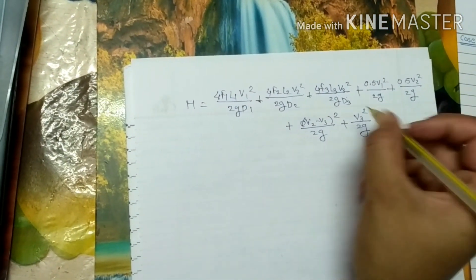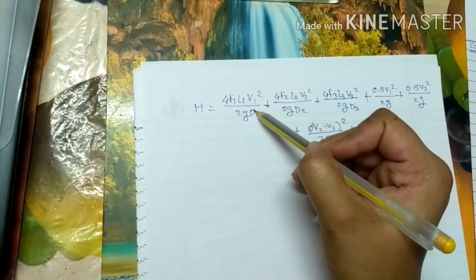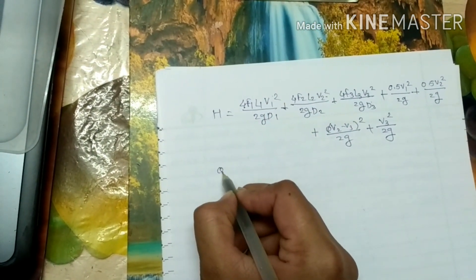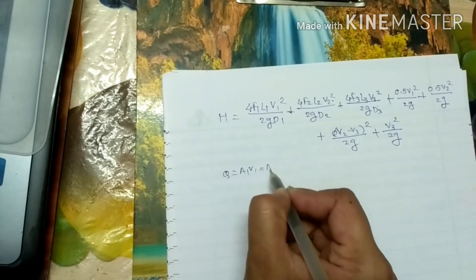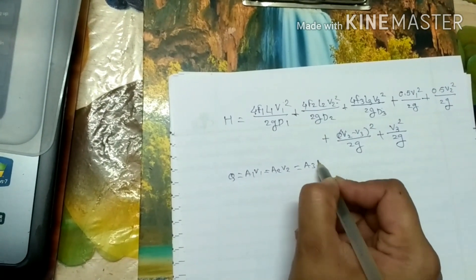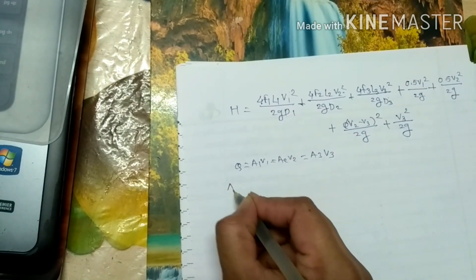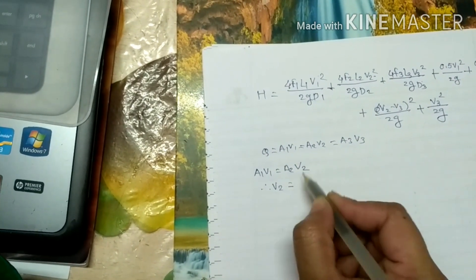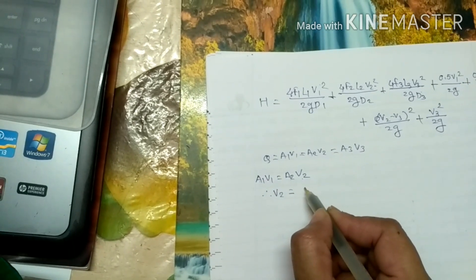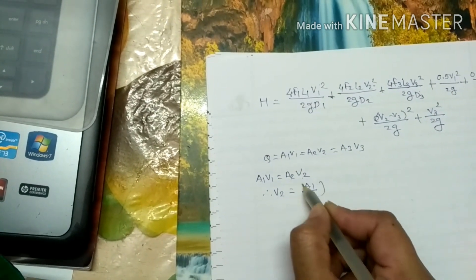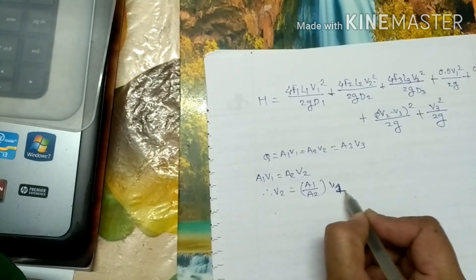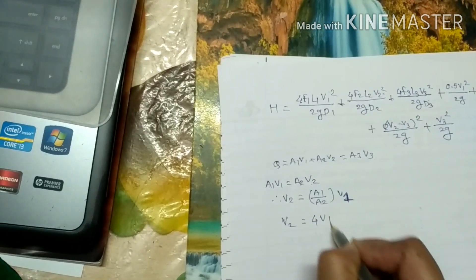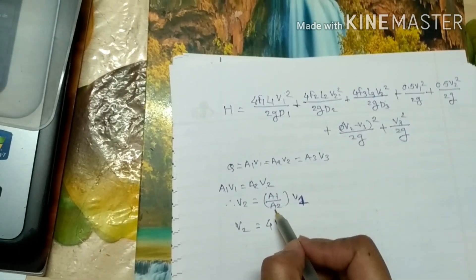We have values of f, L, and d for all pipes, but v1, v2, and v3 are unknown. To calculate them, use continuity: Q = a1·v1 = a2·v2 = a3·v3. From the first relation, a1·v1 = a2·v2, so v2 = (a1/a2)·v1. Calculating this gives v2 = 4·v1 as the first relation.